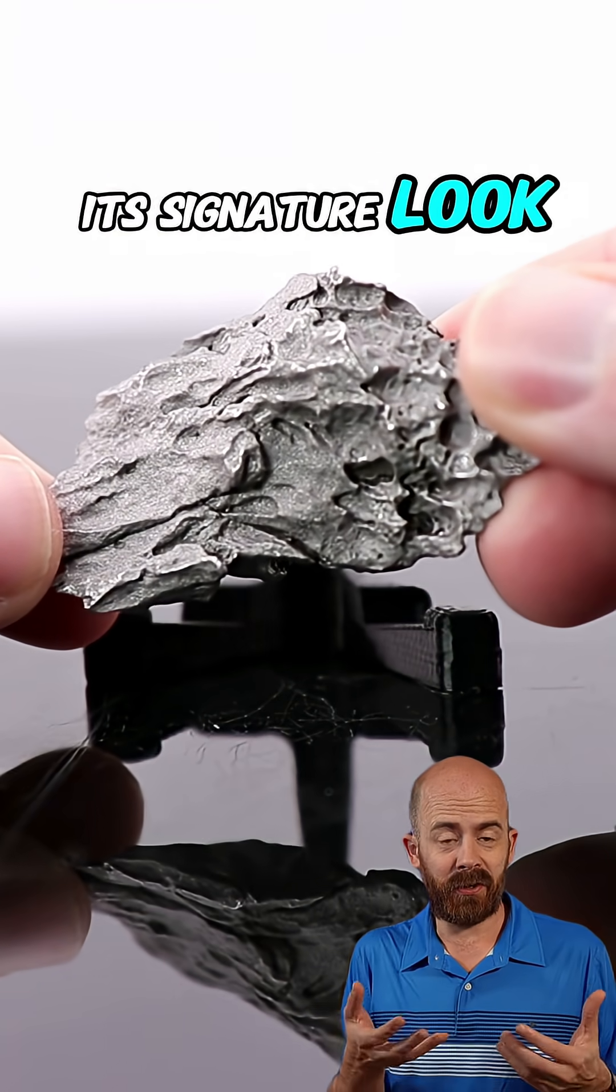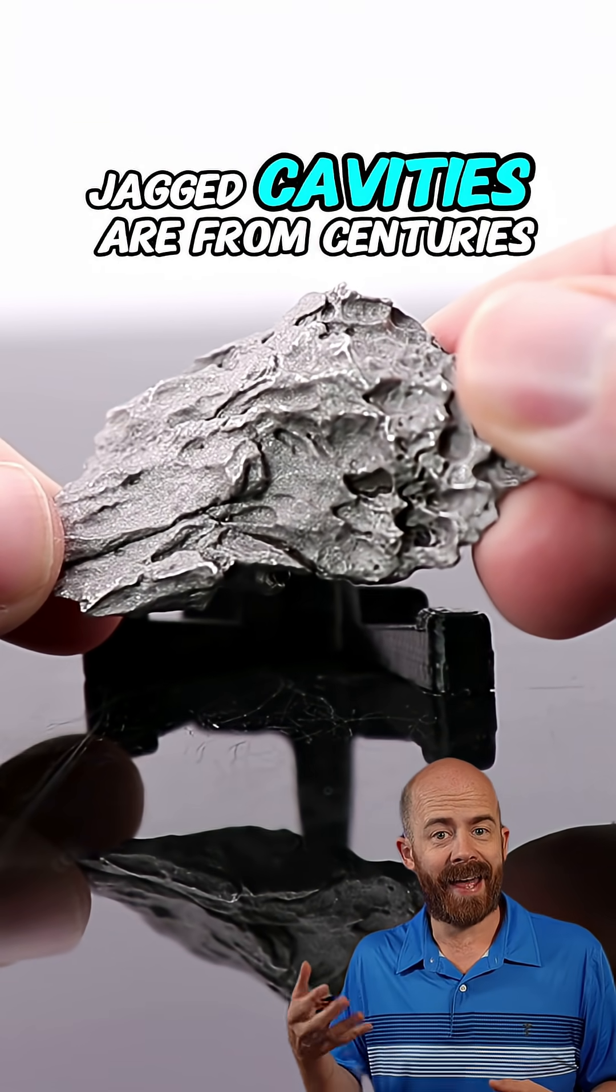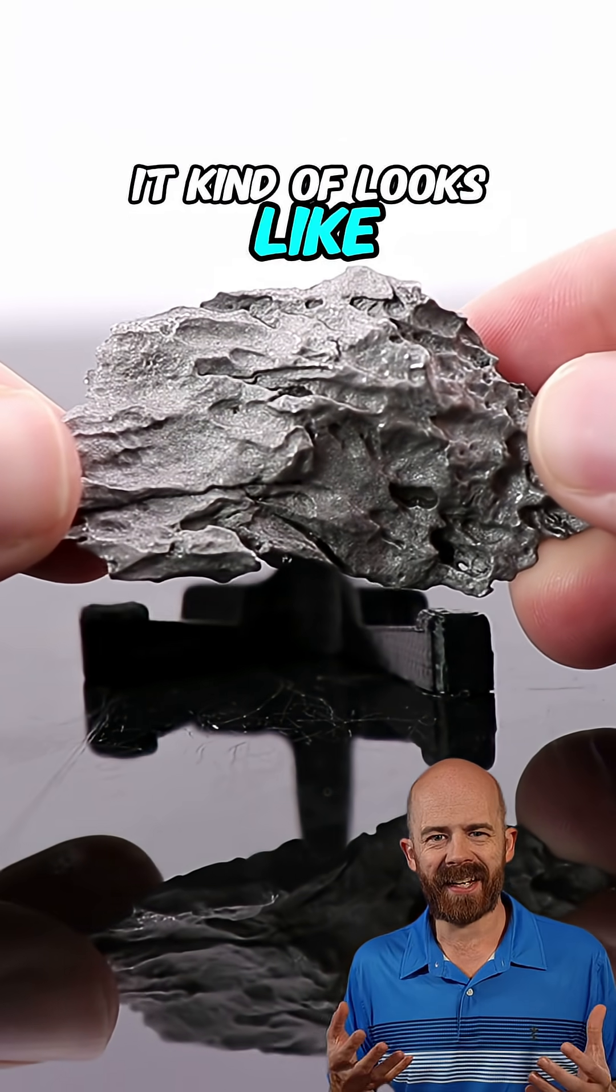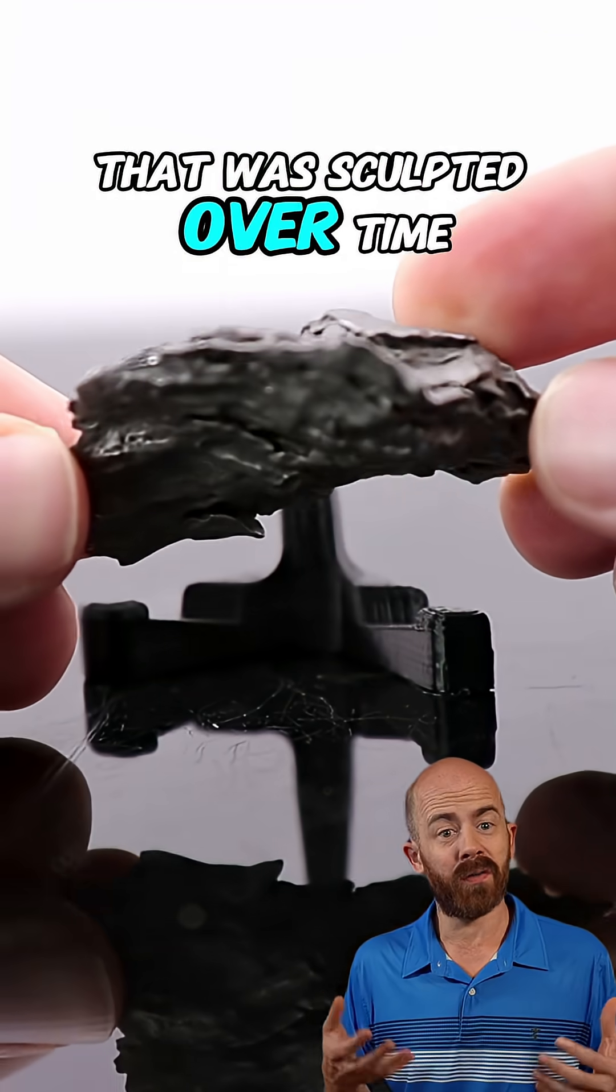That's what actually gives Dronino its signature look you see here. These wild, jagged cavities are from centuries of oxidation eating away at the metal. I think it kind of looks like an iron sponge that was sculpted over time.